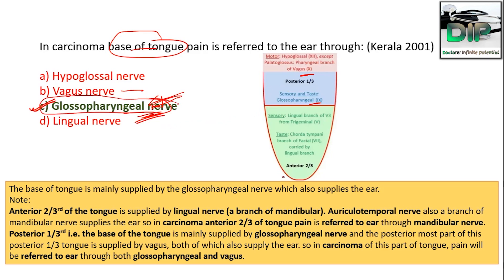The anterior two-thirds of the tongue is supplied by the mandibular branch, so if the question were about the anterior tongue, the pain would be referred via the mandibular nerve.